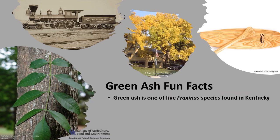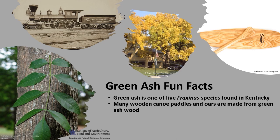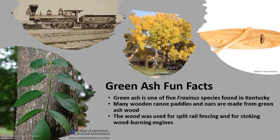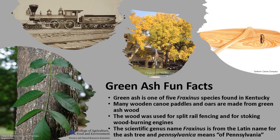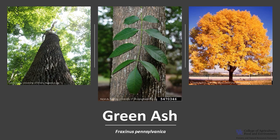Now for a few fun facts about green ash. Green ash is one of the five Fraxinus species found in Kentucky according to Wharton and Barbour. Many wooden canoe paddles and oars are made from green ash wood. The wood was used for split rail fencing and for stoking wood-burning engines all along the Mississippi Valley. The scientific genus name Fraxinus is from the Latin name for the ash tree, and pennsylvanica means from Pennsylvania. Thanks for joining me to learn about this native ash — I hope you get the opportunity to get out into your woodland, local park, and neighborhood and enjoy the green ash.